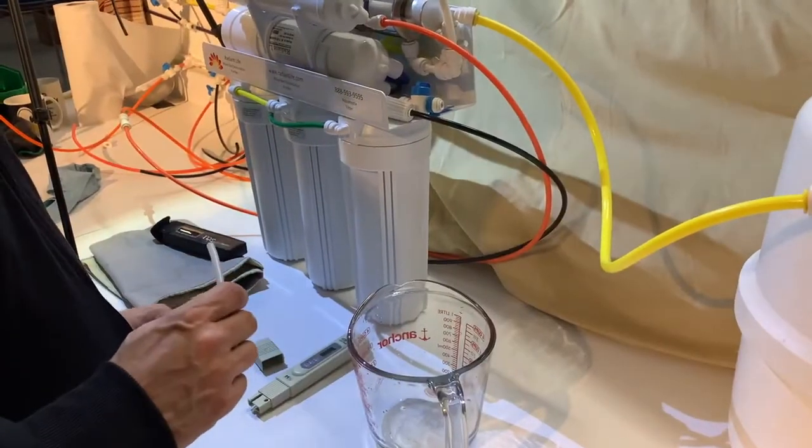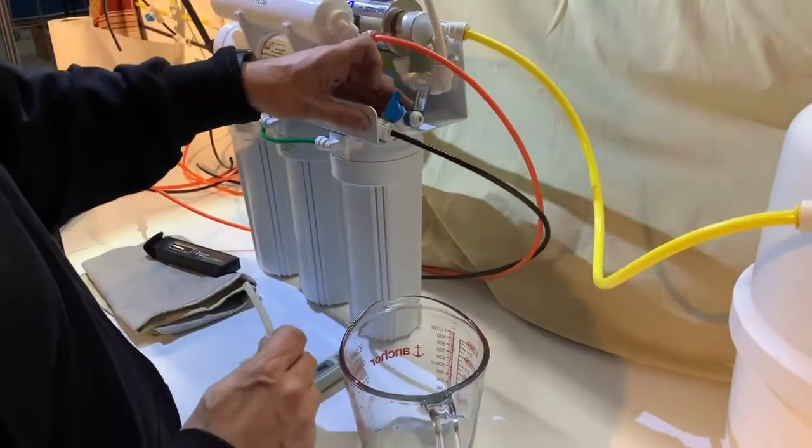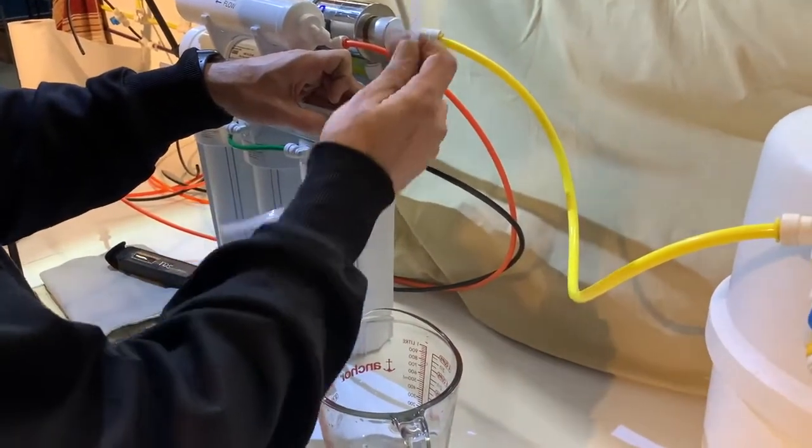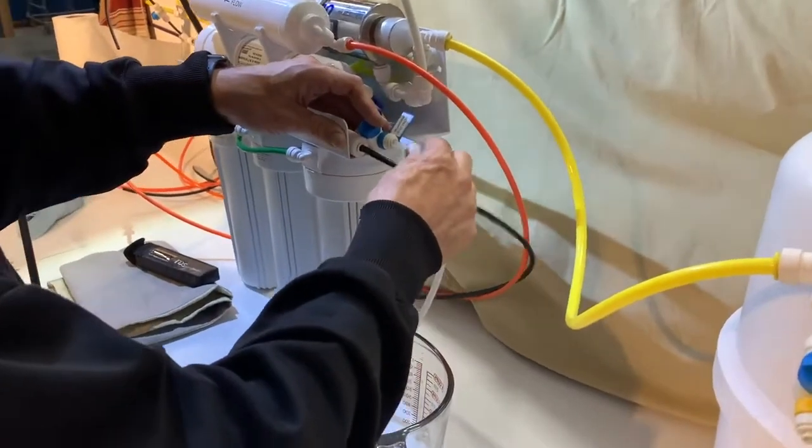All right, the second valve we're going to test is called the membrane test valve. It's on the right hand side of your 14-stage system. Again, we can use the extension, but they're not necessary.